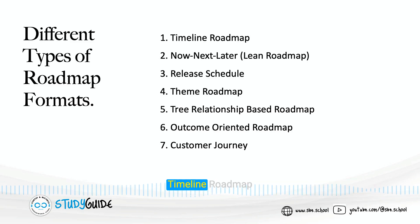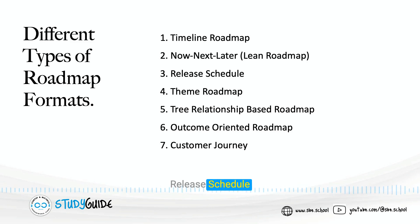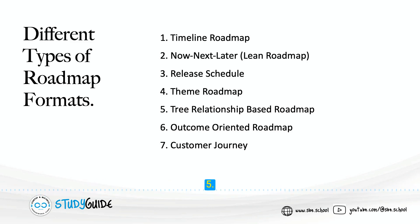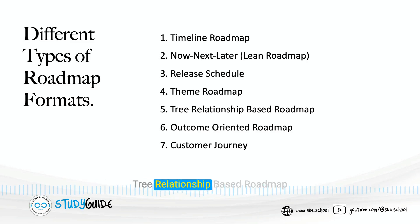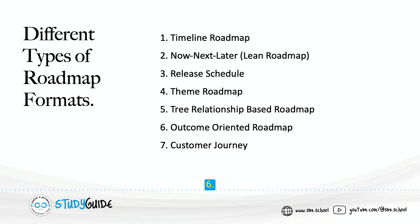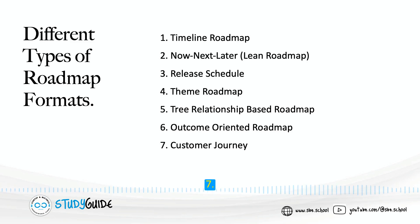The seven types are: 1. Timeline roadmap. 2. Now-next-later. 3. Release schedule. 4. Theme roadmap. 5. Tree relationship-based roadmap. 6. Outcome-oriented roadmap. 7. Customer journey.